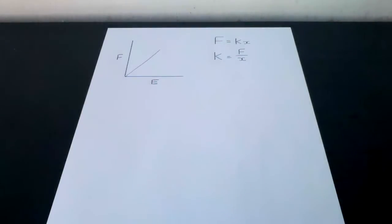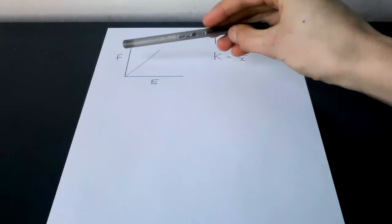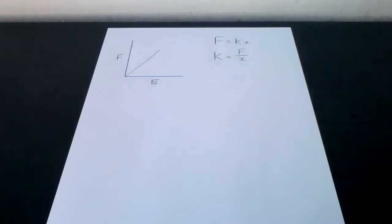If you measure how a spring stretches as you apply increasing force and plot extension, E, against force, F, the graph will be a straight line.